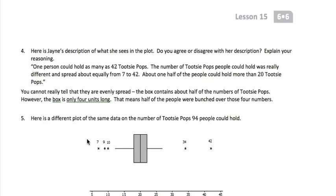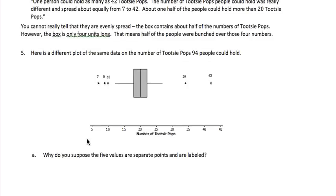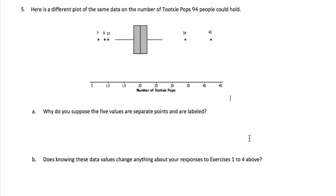Here is a different plot of the same data on the number Tootsie Pops 94 people could hold. Why do you suppose the five values are separate points and are labeled? Perhaps they are separate and labeled because they are far away from most of the other values. And this box plot really tells us that more than half of the data is from about 12 to 27 Tootsie Pops. Does knowing these data values change anything about your responses to exercises 1 to 4 above?